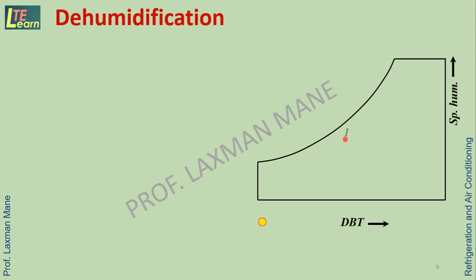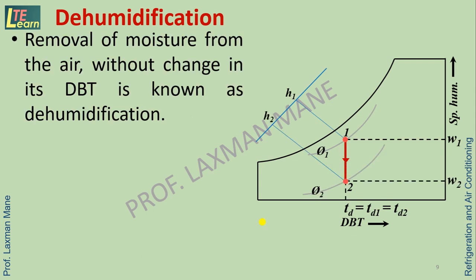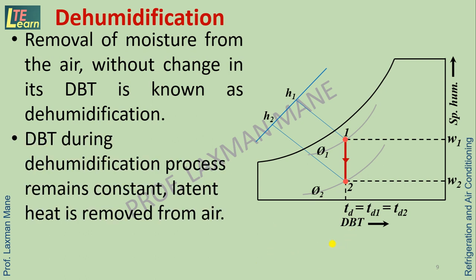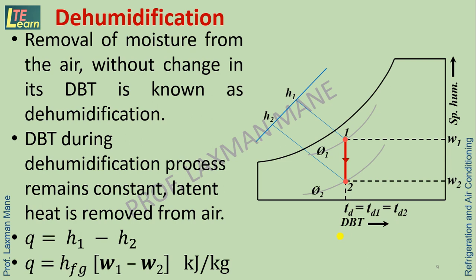In the dehumidification process, removal of moisture from the air is done without change in its dry bulb temperature. The dry bulb temperature during dehumidification remains constant, and latent heat is removed from the air, given as Q = H1 − H2 (kJ/kg).